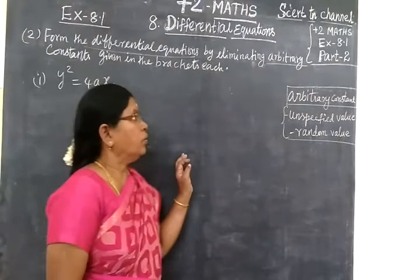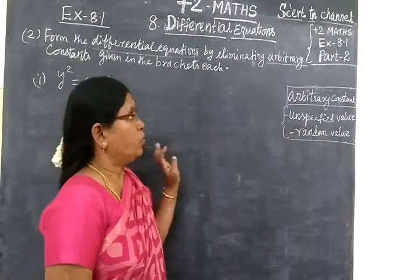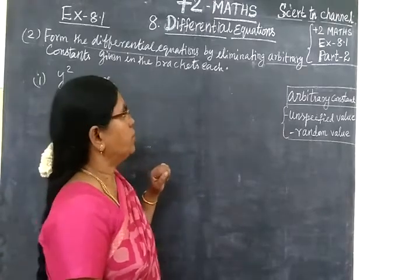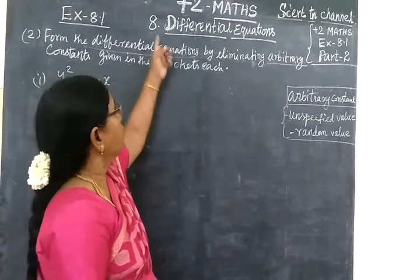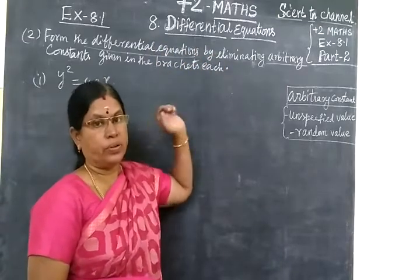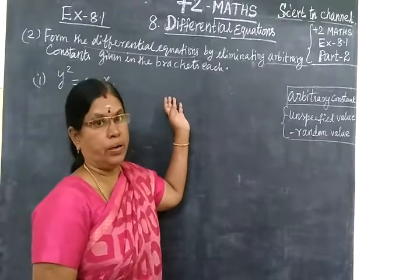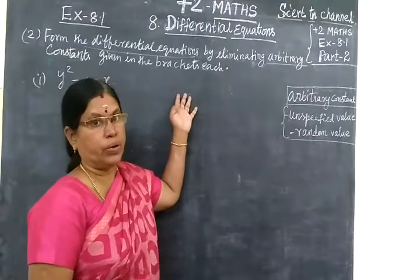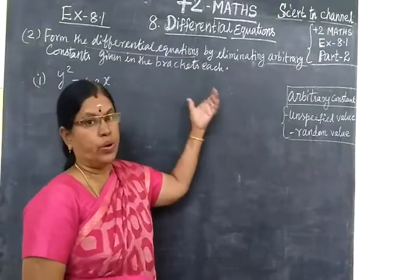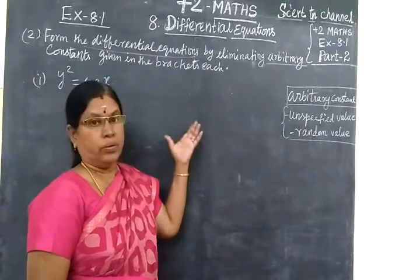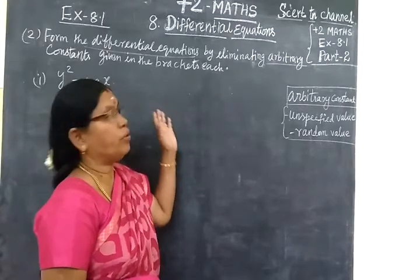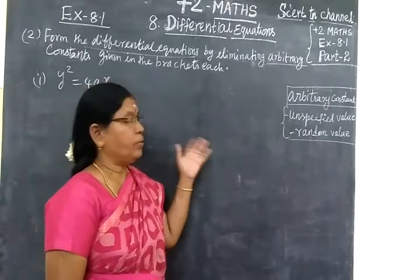Good morning, guys. So far, 10th max is the video. Plus 2 max — Plus 2 max is the 8th chapter, differential equation. Schools are the first volume. Almost the first volume is the second level. The second volume is the 8th chapter. In the video, in 1 month, the 8th chapter will be covered. The aim in the video starts.